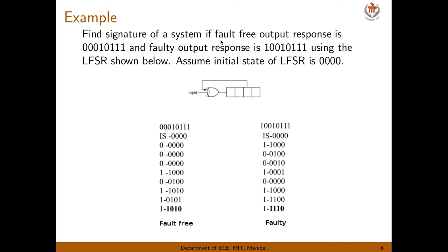Find the signature of a system where the fault-free output response is 0,0,0,1,0,1,1,1 and the faulty output response has the first bit changed from 0 to 1. Using the LFSR given — a 4-bit shift register where the first flip-flop gets the input XORed with the third flip-flop output — we calculate the signature. Initially, assume the LFSR content is 0,0,0,0.